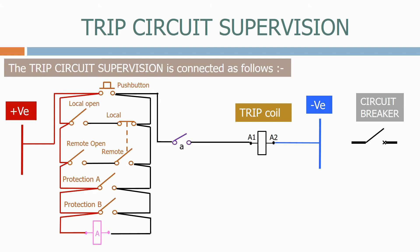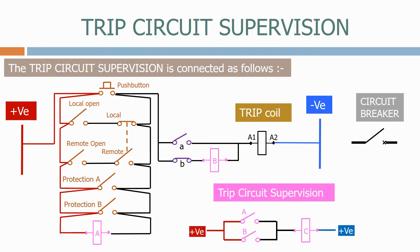We also want to monitor the trip circuit when the circuit breaker is open. To do that we provide a B-coil. We then feed contacts from both the A and B-coils into a third coil, the C-coil, which is connected to its own DC supply.